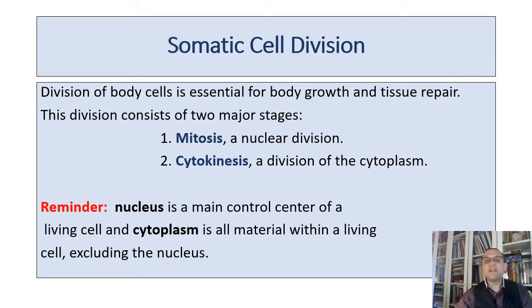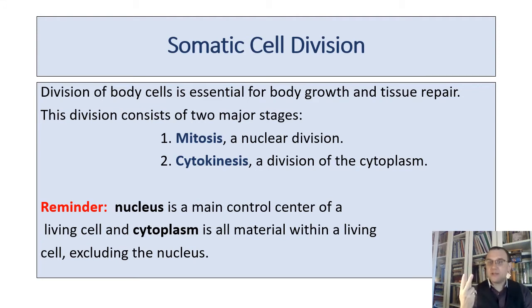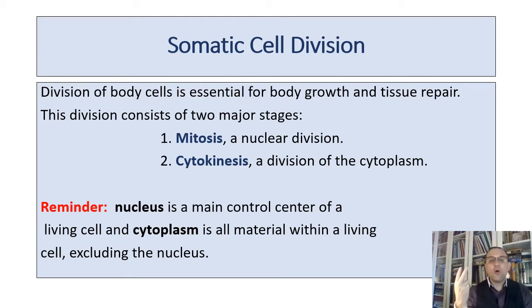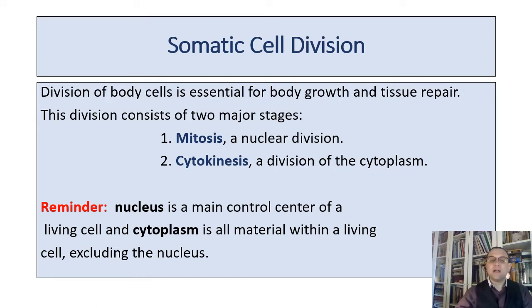Division of body cells is essential for body growth and tissue repair. This division consists of two major stages: mitosis, a division of the nucleus, and cytokinesis, a division of the cytoplasm. The nucleus is the main control center of a living cell, and cytoplasm is all material within a living cell, excluding the nucleus.